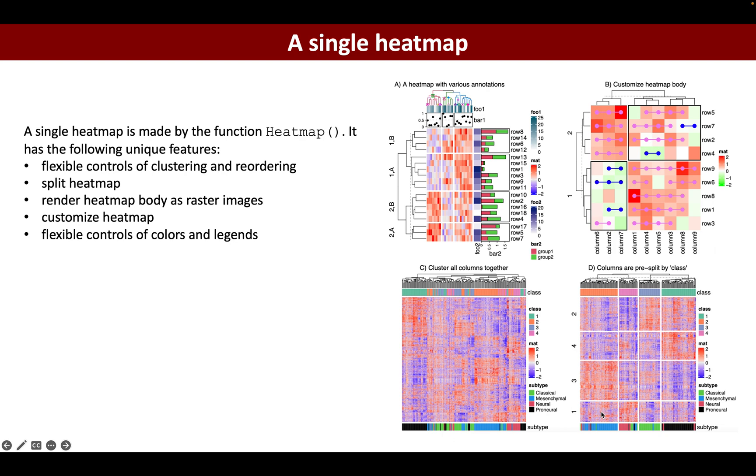It also allows to render the heatmap body as raster images, especially useful when you have a very huge heatmap. It helps to reduce the final size and makes the PDF viewer open the plot very fast.